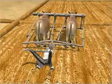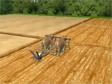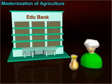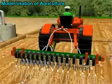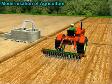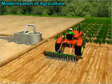Banks finance agriculture and allied activities. They help farmers by extending credit for modernization of agriculture, providing irrigation facilities, and development of land.